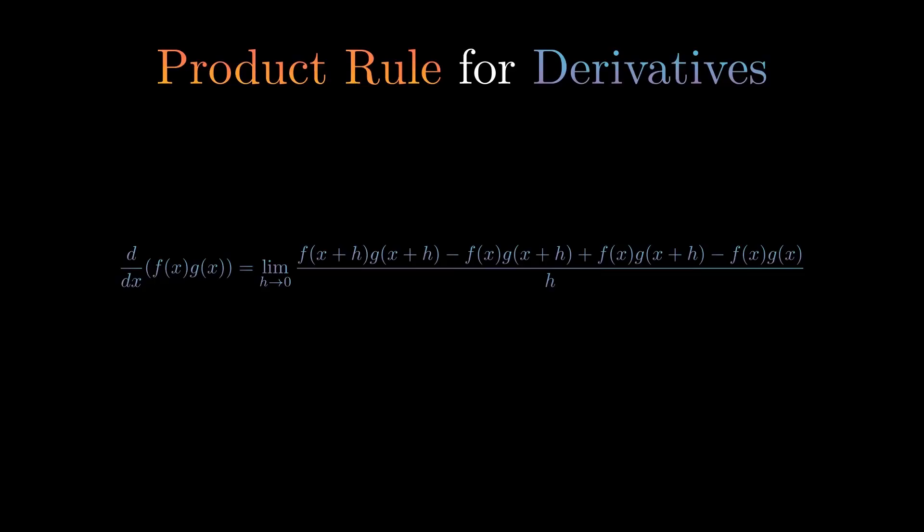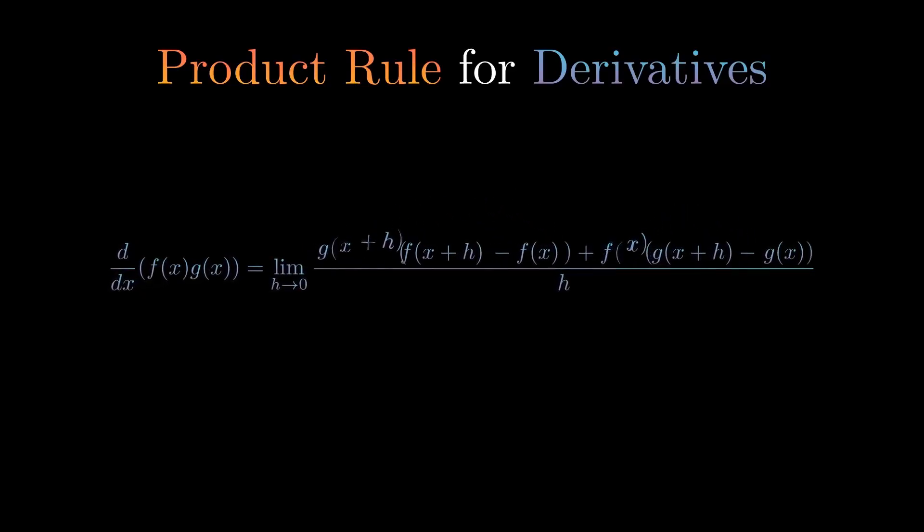It seems like a bizarre term to add into here as it just makes everything much more complicated, but it allows us to break down the limit into its derivatives. Adding and subtracting a term does not change the value as it's equivalent to adding zero. The trick is to factor out g(x + h) from the first two terms and f(x) from the last two terms.